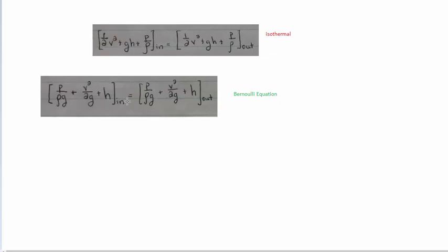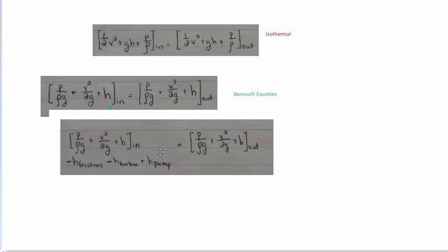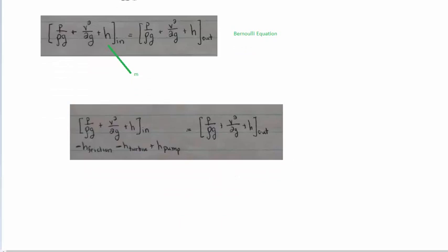One thing to note immediately is the units. The units need to be dimensionally homogeneous, and if h is a height in meters, then going through each term you'll find everything has units of meters — which is a little strange but consistent. When you introduce corrections to the Bernoulli equation, those also come with units of meters. We have a friction term, a turbine term, and a pump term — all in meters. These are called head loss terms.